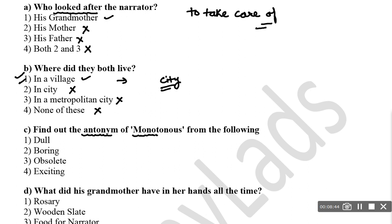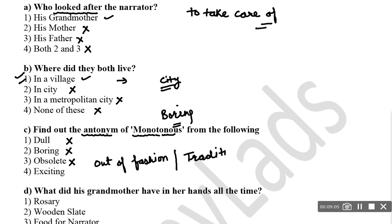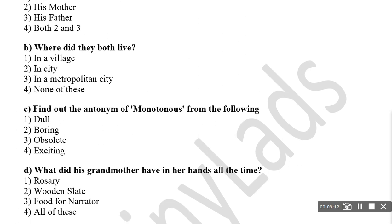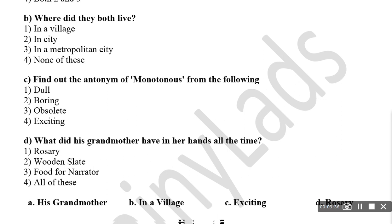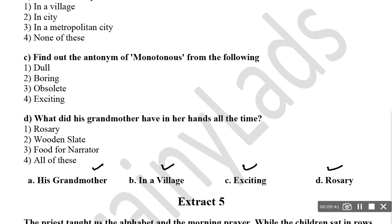Find the antonym of 'monotonous'. Monotonous means boring. So you need its opposite. 'Dull' is itself boring, so that's not right. 'Obsolete' means out of fashion or traditional — also not right. The correct answer is 'exciting'. What did his grandmother always have in her hand? She always had the rosary — the mala — in her hand, telling the beads of the rosary. Let's match the answers: his grandmother, in a village, exciting, and rosary.